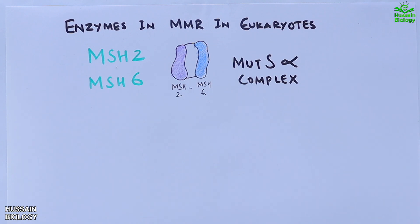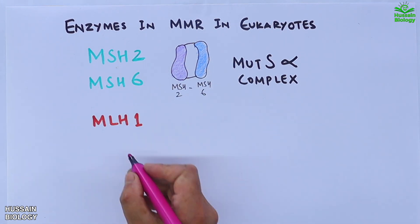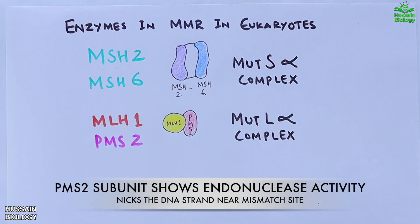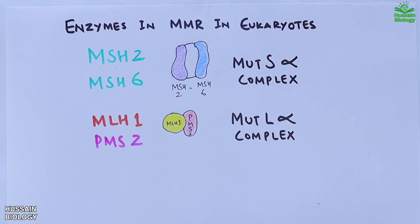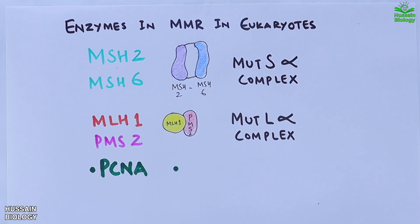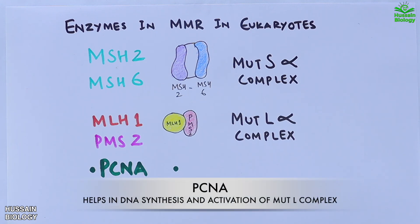Then we have MLH1 and PMS2 enzymes, collectively termed the MutLα complex, which acts as an endonuclease. It works by nicking the DNA strand. We also have the PCNA protein, which aids in repair replication and activation of MutLα.